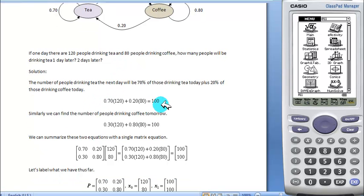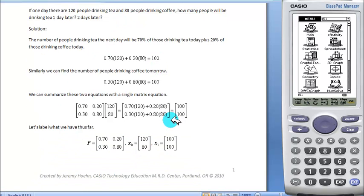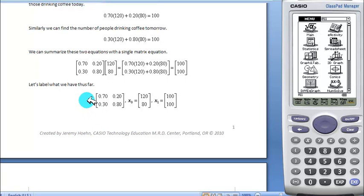We can solve this purely algebraically, of course, but we set up some matrices. Here we have our transition matrix, it's named P, and two of our state vectors.